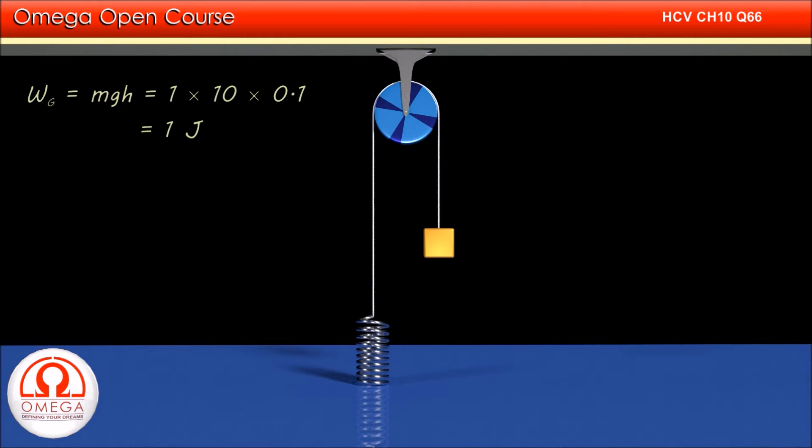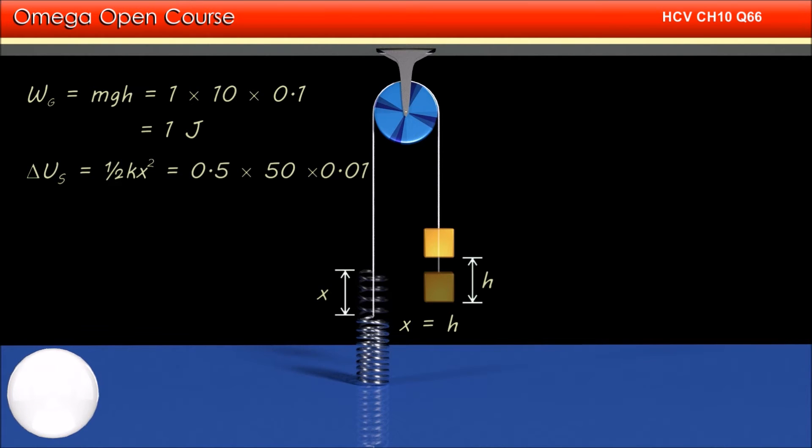As the spring is connected to the block directly through the inextensible string, when the block descends by 10 cm, the spring elongates by 10 cm. Thus, the increase in potential energy of the spring is ½kx² = 0.5 × 50 × 0.01 = 0.25 J.